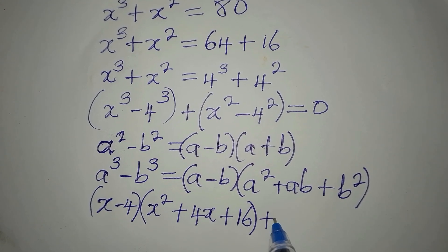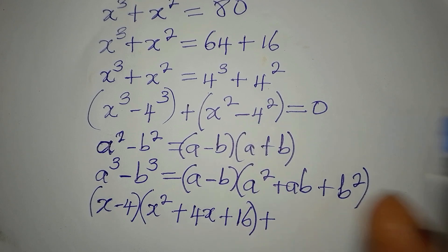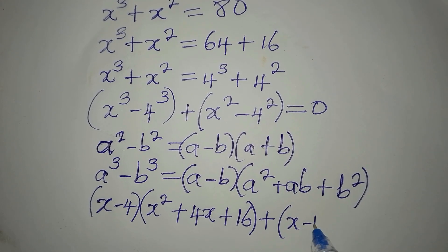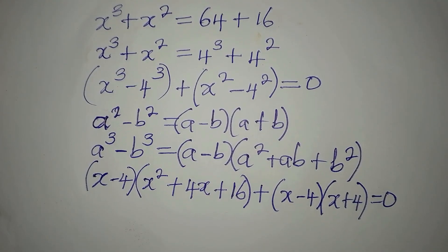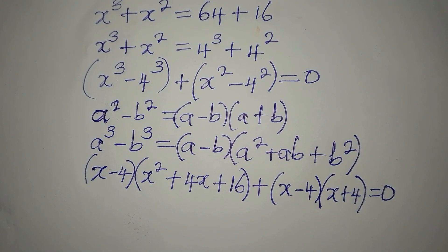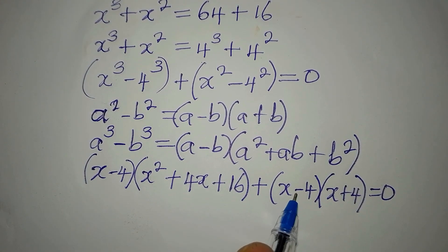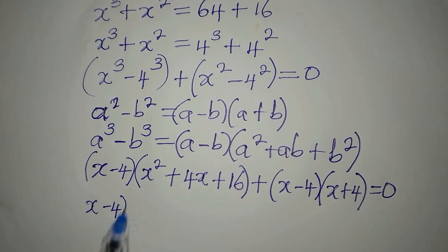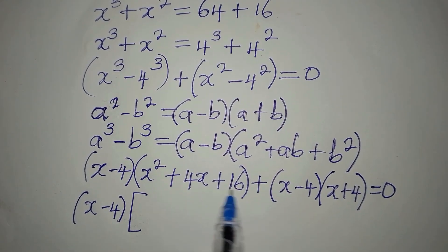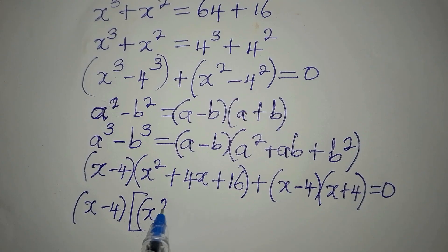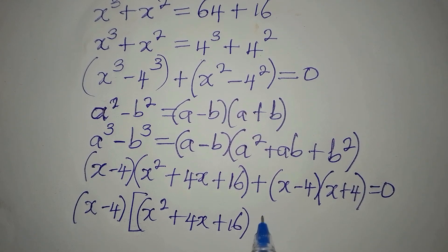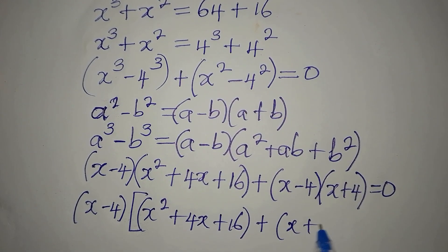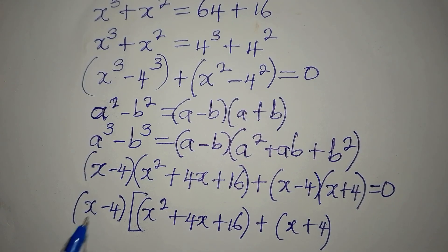Then, applying the difference of two squares to x² - 4², we get (x minus 4)(x plus 4). So the full expression is (x minus 4)(x squared plus 4x plus 16) plus (x minus 4)(x plus 4), equated to zero.